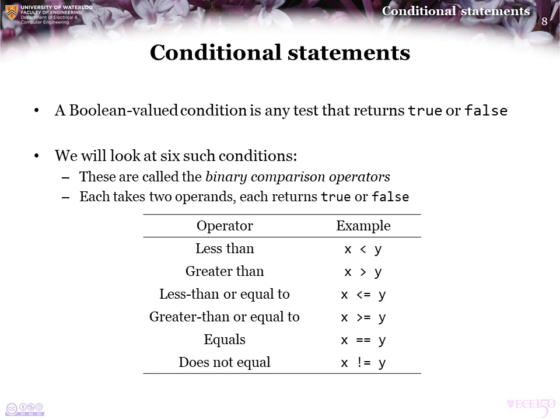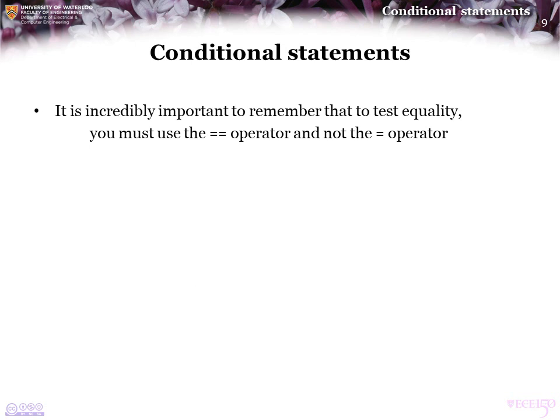The binary comparison operators take two operands, X and Y, and compare them, returning either true or false. For example, if X is 5 and Y is 13, X less than Y evaluates to true, while X greater than or equal to Y evaluates to false. It's incredibly important to remember that to test equality you must use the double equals operator, not the single equals. The single equals is the assignment operator. It's easiest to call double equals the equality operator and single equals the assignment operator.